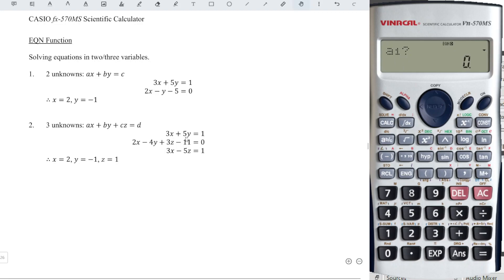So we should have x, y, z missing. So for z missing, which means that the equation we can rewrite as 3x plus 5y plus 0z is equal to 1. Anything times 0, we get back 0. So this is exactly the same as this equation.